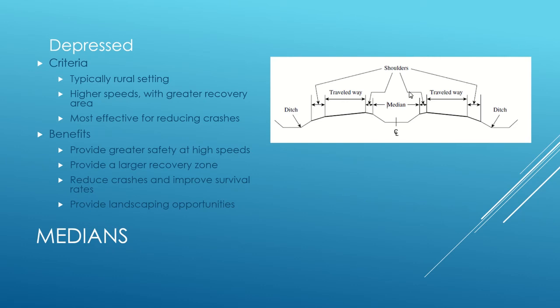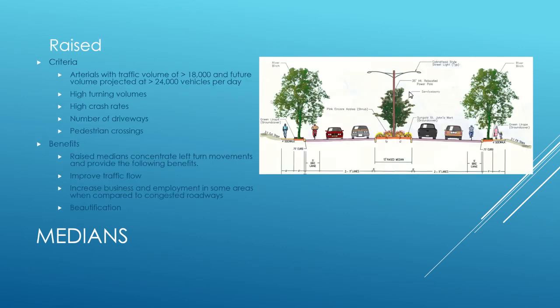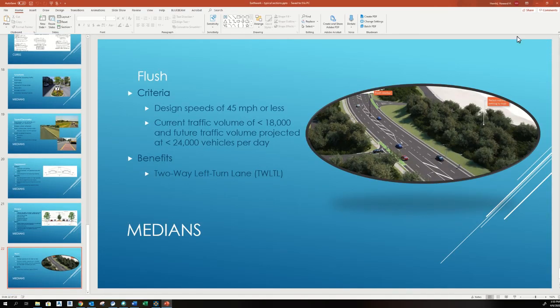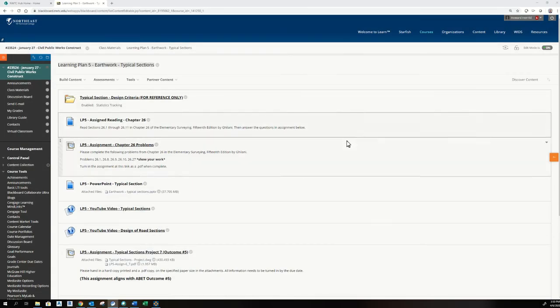The median types are: depressed median, which has a ditch in the middle; raised median, with curb and gutter, whose benefit is to separate traffic; and flush median, which can be used for turning. That covers typical sections and their function. Once you get to the assignment, there's also a video there to help you tackle it.